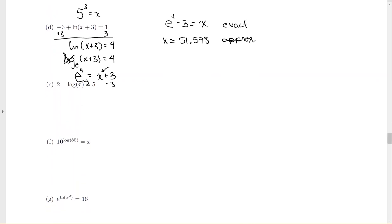Let's take a look at letter e. I have a 2 out in front of the logarithm, so I'm going to subtract 2 from both sides of the equation, bring down the minus log of x equals 3. I still have a minus in front of that logarithm. That's negative 1 times the logarithm. So to unhook multiplication, divide off by negative 1. So I have log of x equals negative 3.